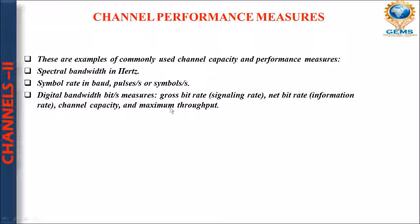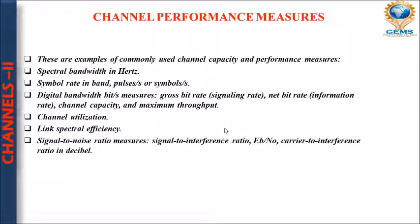We also have channel capacity and maximum throughput. Very important is channel utilization — how the channel is being utilized. Link spectral efficiency also plays a very important role in performance. Next is SNR, which stands for signal-to-noise ratio, meaning how much noise is being carried with the signal, measured as a ratio. This measure is also known as signal-to-interference ratio. It is also known as Eb/No, and carrier-to-interference ratio, calculated in decibels. These are the performance measures.